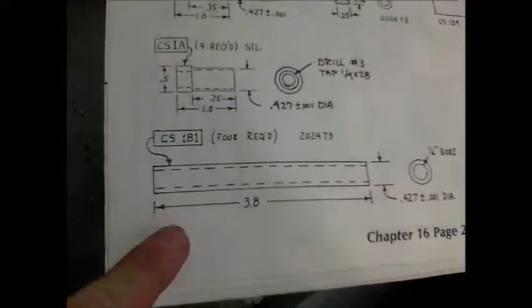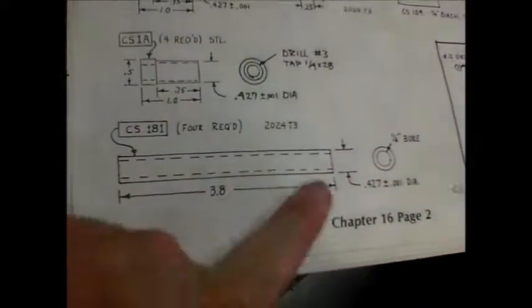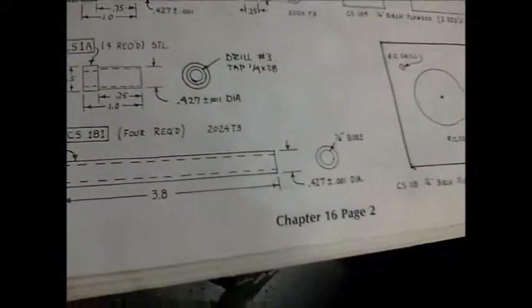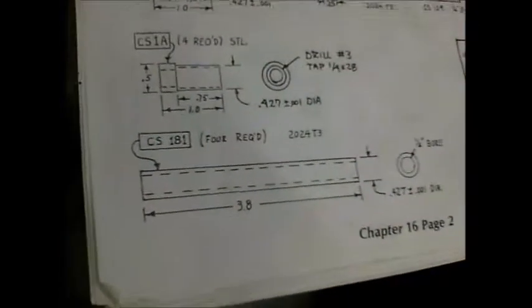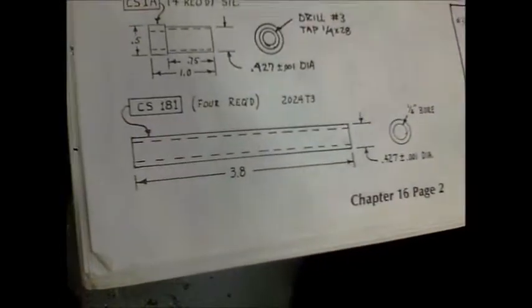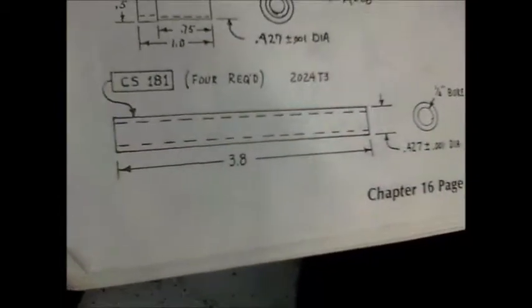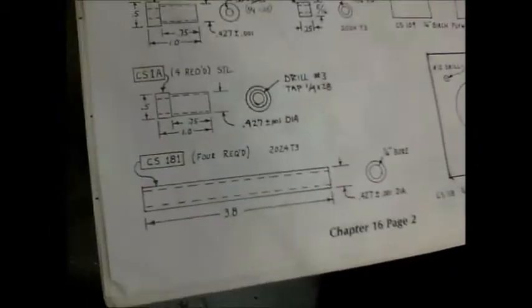Okay guys, tonight we're looking at the plans working on controls. I need this part called CS 181, there's four of those required. It gives you the dimensions and the length, and I'm going to work on my lathe tonight to turn this piece of raw aluminum, which is 2024 T3 aluminum. I'm going to turn that on my lathe to the dimensions as specified in the drawings here. So let's set up with the lathe and see what we've got here.